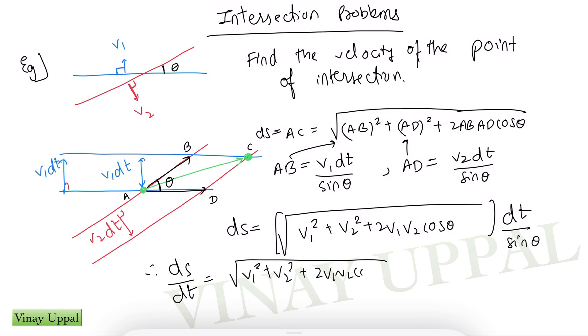Therefore my velocity of the intersection point would be ds by dt and therefore that is going to be square root of v1 squared plus v2 squared plus 2 v1 v2 cos theta, the whole divided by sin theta. So that will be your velocity of the intersection point.